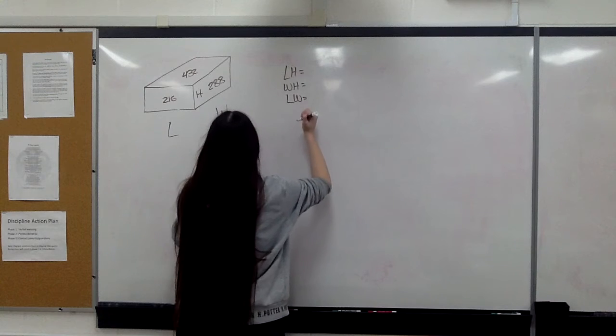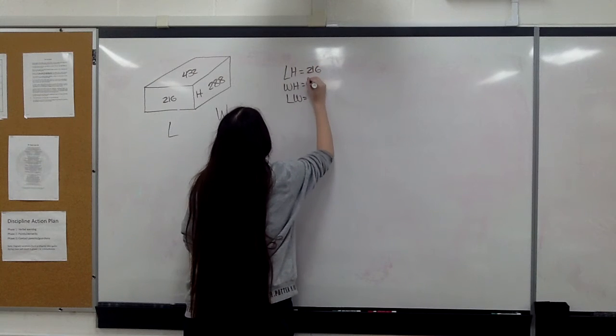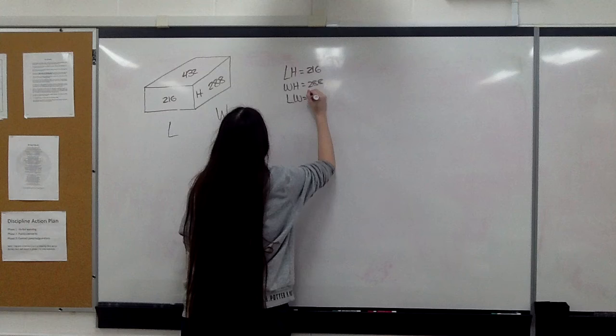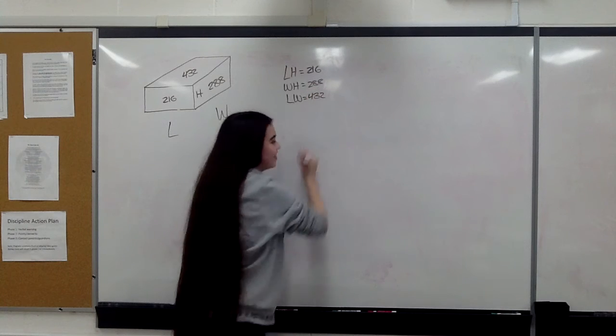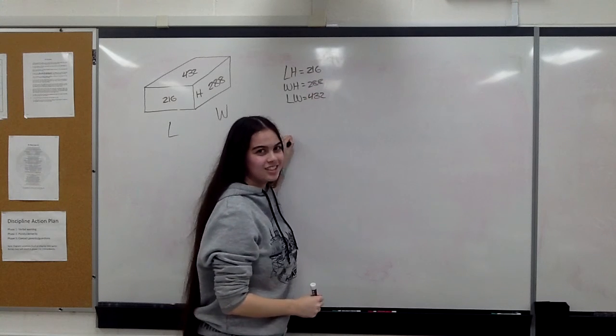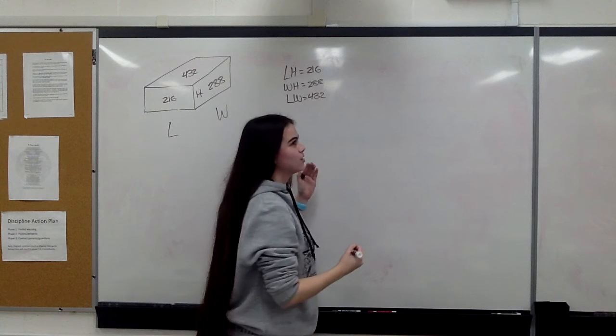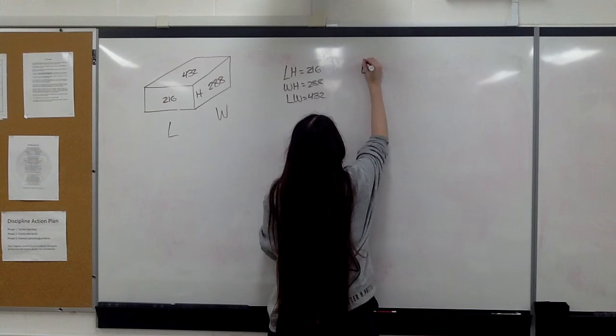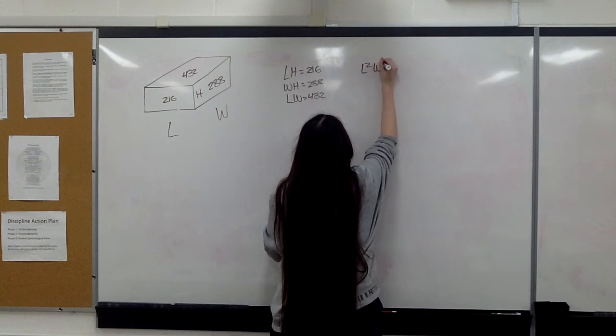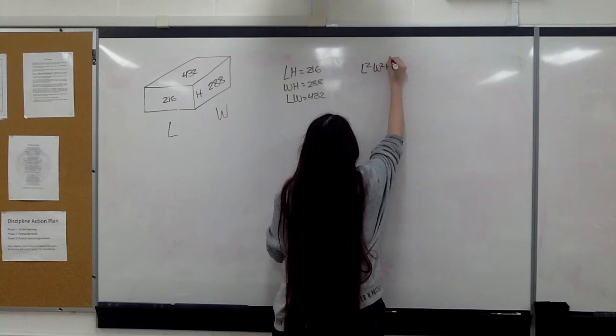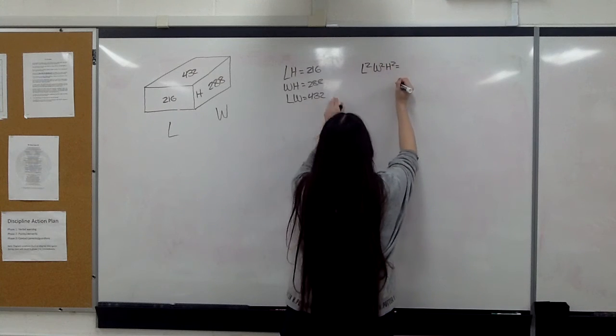You have the areas for it. From there, you want to multiply all these together. So that gives you L squared times width squared times height squared, multiplied by all these values.